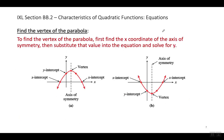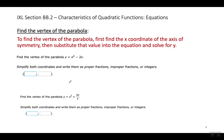We're going to use it on the next set of problems right here. Now we're going to have to find the vertex of the parabola. Again, I wrote in red what you have to do. To find the vertex of the parabola, first find the X coordinate of the axis of symmetry. Then substitute that value into the equation and solve for Y. Let me walk you through it so you can see it's not a big deal.